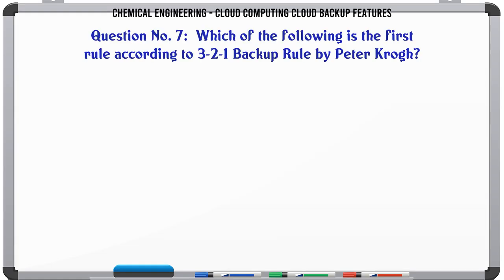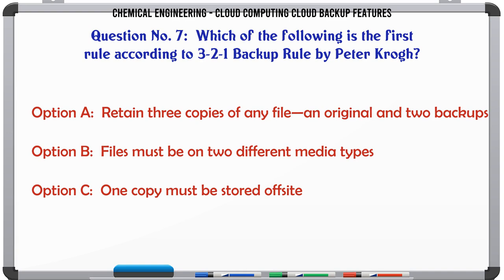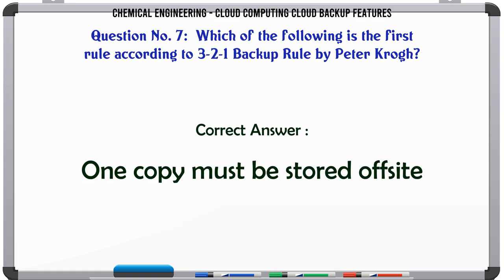Which of the following is the first rule according to the 3-2-1 backup rule by Peter Krogh? A) Retain 3 copies of any file — original and 2 backups. B) Files must be on 2 different media types. C) One copy must be stored off-site. D) All of the mentioned. The correct answer is: One copy must be stored off-site.